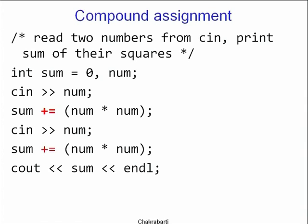We read num a second time and do the same thing, keeping 'sum +='. This is not the property of plus alone — you can do it with most operators. If you are going to compute the product of all numbers, you would say 'sum *='. Whenever you can put an ordinary operator, you can put it in front of an equals sign — that is called a compound assignment.